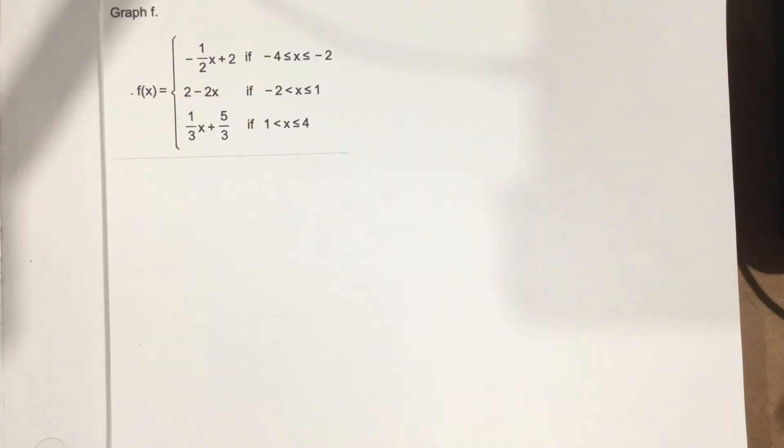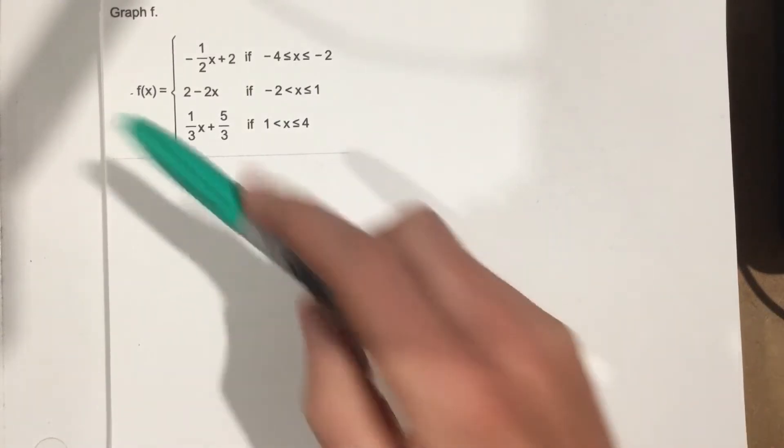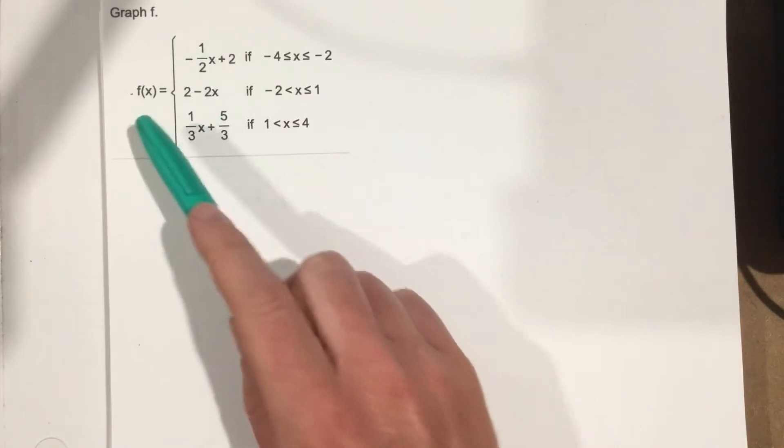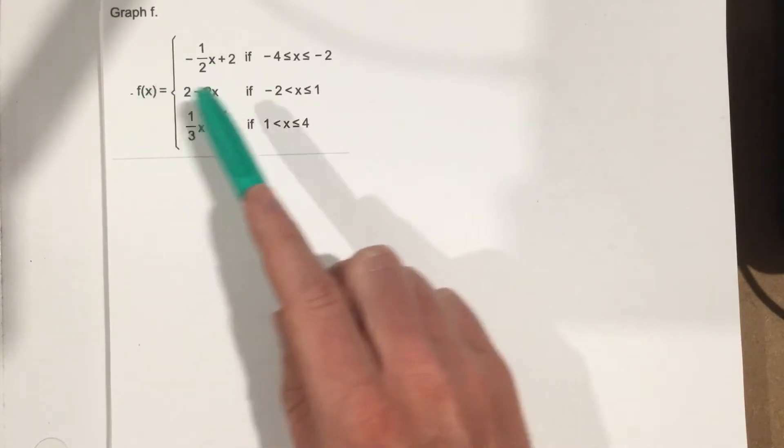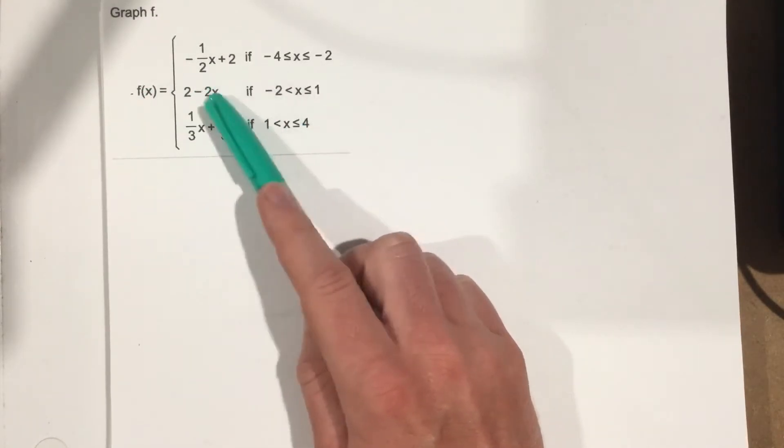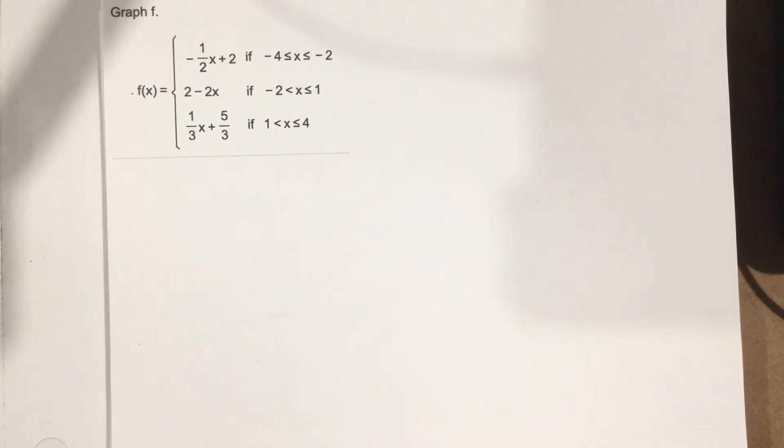This is problem number 7 from section 2.4. This problem says they want us to graph f. f is our function, f of x, and it's a piecewise function with three different parts to it.